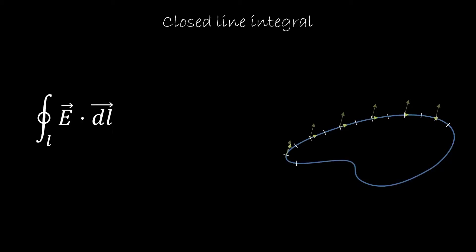Closed lines are interesting enough that we want an operator specific for them. For example, if our vector field is a force, the closed line integral will tell us the work done on a closed line, and if this work is zero, then the force would be conservative. If the vector field represents the velocity of a fluid, the integral along a closed line would tell us whether the fluid is turbulent or not, in which case the closed line integral would be zero.